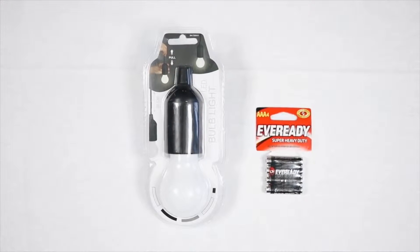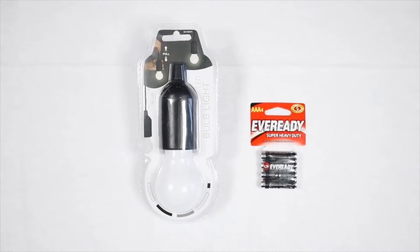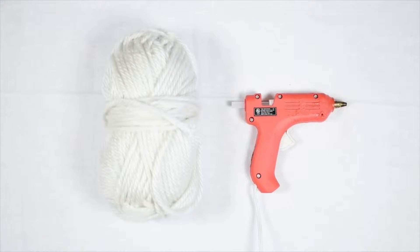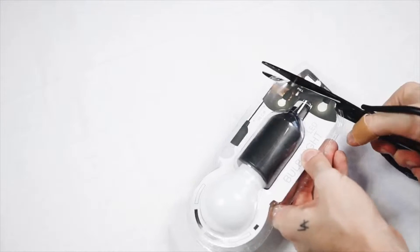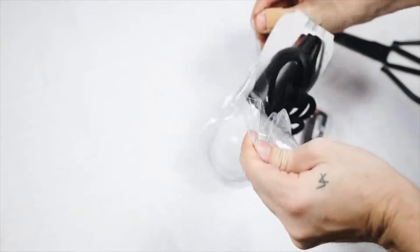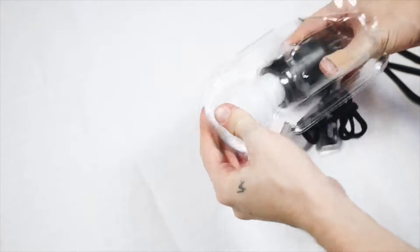I am really in love with this first project. What I used was this hanging light bulb, some batteries from the dollar store, and then additional supplies were just some yarn and a hot glue gun. I did use a little bit of spray paint.